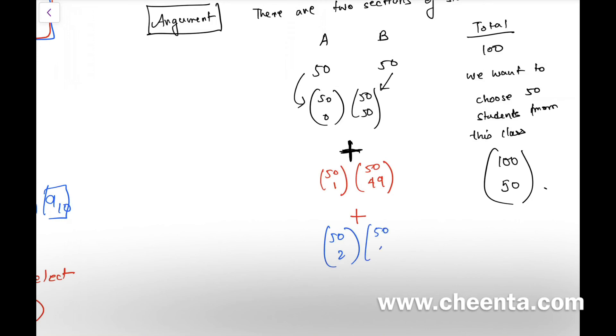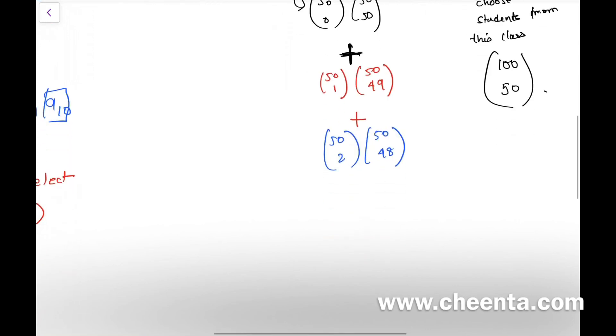Or you could choose two students from the first class, first section, and 48 students from the second section. So this will go on until you choose all the students from the first section and choose no student from the second section.